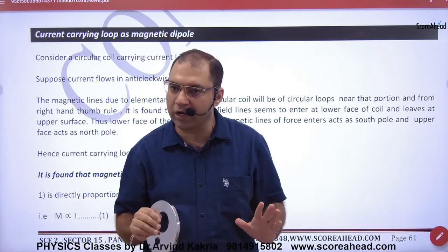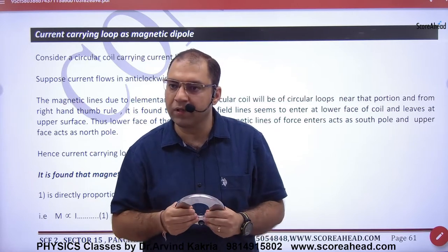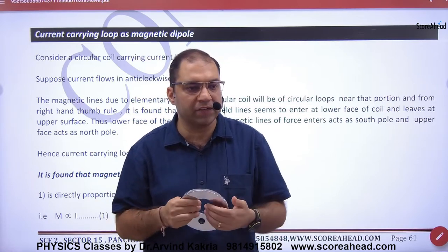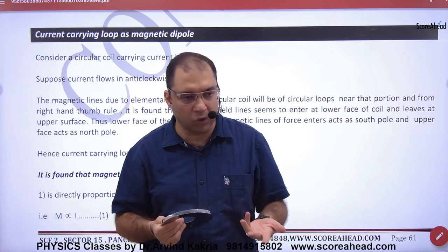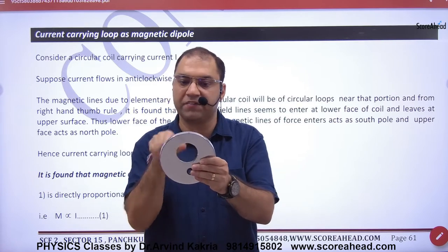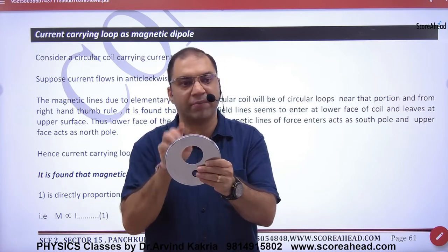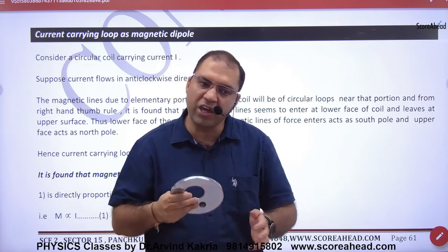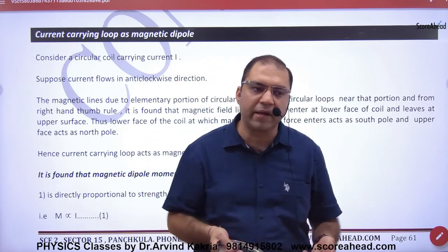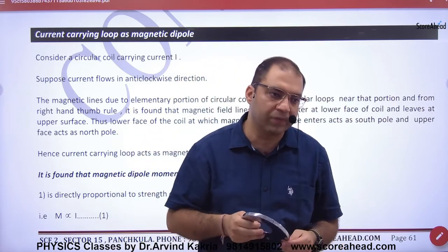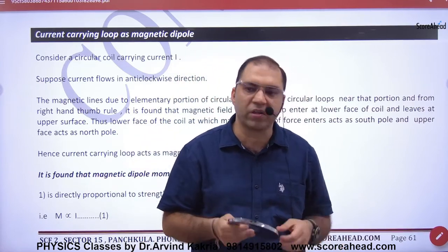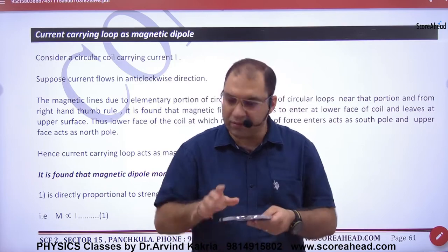So one side is south and one side is north. But if the direction of current is changed — if it is anticlockwise, now it becomes north. It will change. It is not fixed. It depends on how the current flows. So these are imaginary poles.